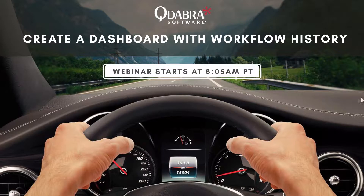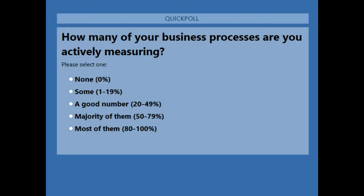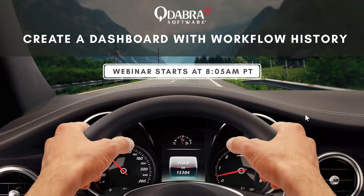I'd like to quickly launch a poll and ask you a question before we get started. How many of your business processes do you currently have dashboarded — how are you measuring? We've got a couple of responses coming in. Thank you for answering. Everyone has something, but we're all in the 'some' category — about close to 20% in the 'good number' range and a little less in the majority. Thanks for the quick show of hands there.